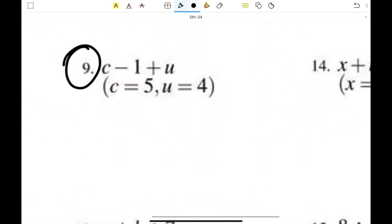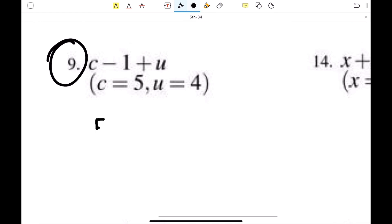Number 9, c minus 1 plus u. They give us c is 5, so I'm going to plug it in. And they give us u is 4, so I'm going to plug that in as well. And you've got to use PEMDAS again. So left to right. So 5 minus 1 is 4 plus 4, which is 8.